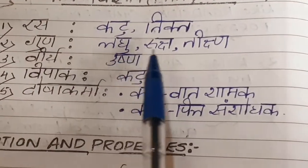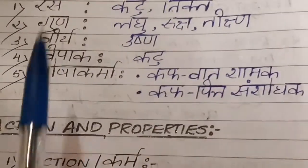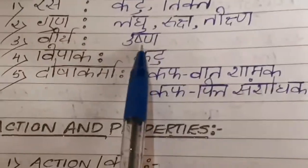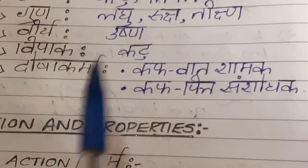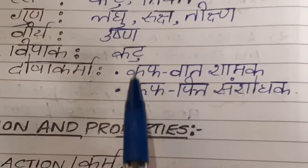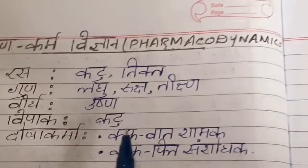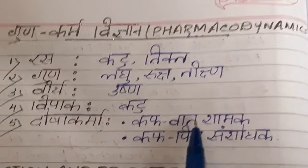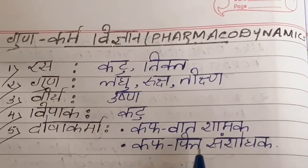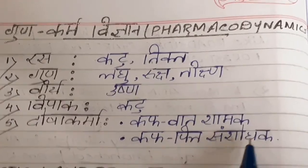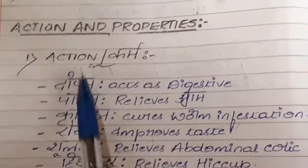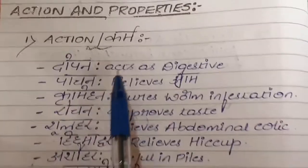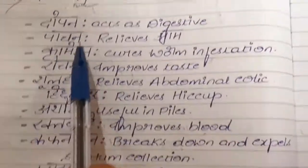Guna-Karma Vijnana — pharmacodynamics of the drug: Rasa — it contains Katu and Tikta rasa; Guna — it has Laghu, Ruksha, and Tikshna guna; Virya — it has Ushna virya; Vipaka — it has Katu vipaka. Therefore the Dosha karma of the drug is Kapha and Vata shamaka — it alleviates Kapha dosha and Vata dosha — and also Kapha and Pitta samshodhaka.